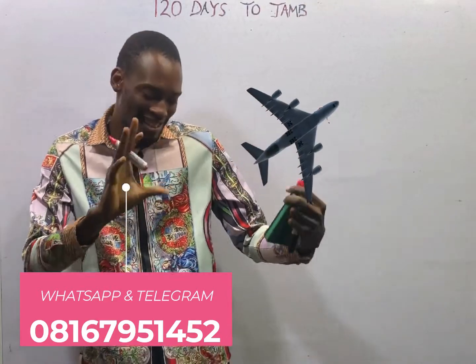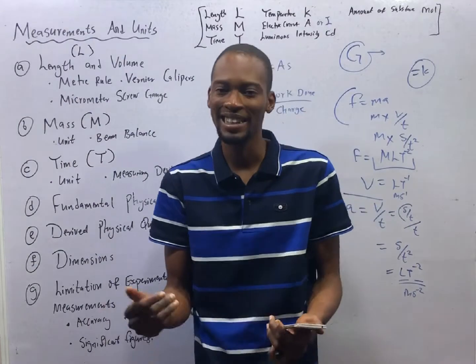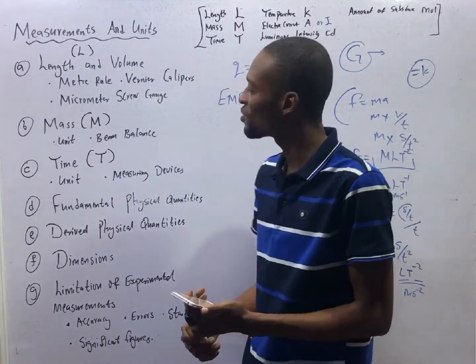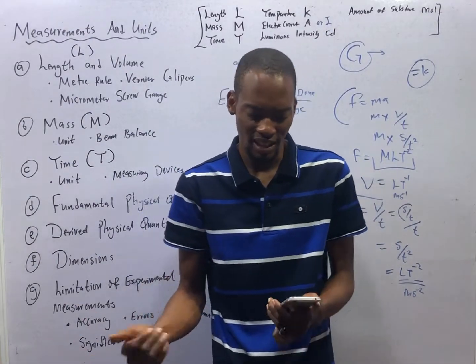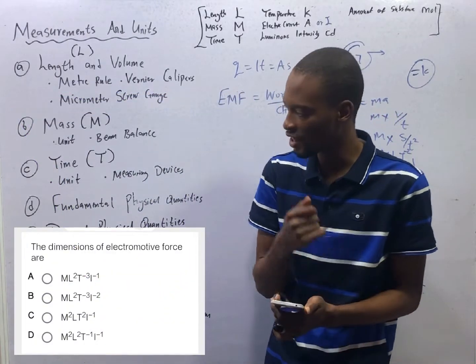Ladies and gentlemen, it is time to take off. You are welcome to episode number 9 of the 120 days to jump series with Flash ID. This question says, the dimensions of electromotive force are dashed.